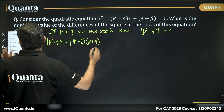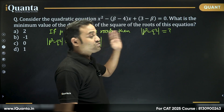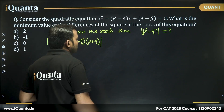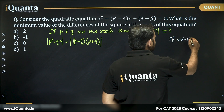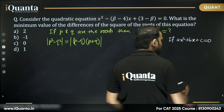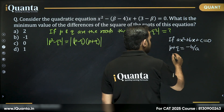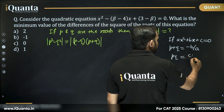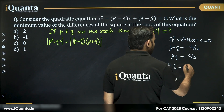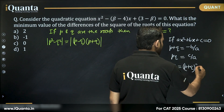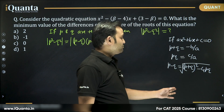Whenever we have a quadratic expression ax² + bx + c = 0, the sum of roots p + q equals minus b over a, and the product of roots pq equals c over a. And p minus q equals the square root of (p + q)² minus 4pq.